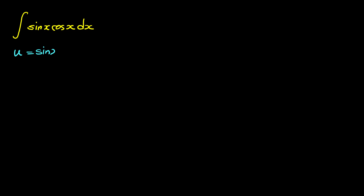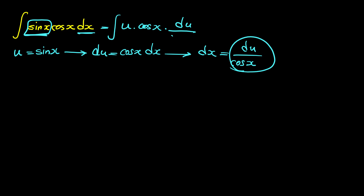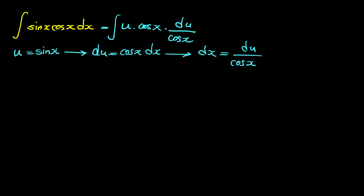In the first method we suppose u to be sine of x. The reason that this method works is because du, the derivative of u, is cosine x dx. If we solve this relation for dx, then dx equals du over cosine x. Now substituting, sine x becomes u and cosine x dx becomes du over cosine x.